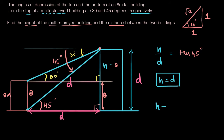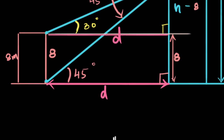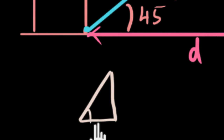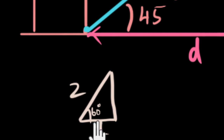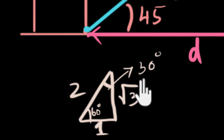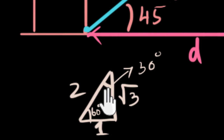Now I look at the other triangle. I know h minus 8 divided by d equals tan 30 — opposite by adjacent equals tan of this angle. This is where the 8 is coming in handy. To remember tan 30, I draw my 60-degree triangle: if this is one, this is two, and this length is root 3 by Pythagoras. Tan 30 is 1/root 3 — 30 is a smaller angle, so its tan has to be less than one.